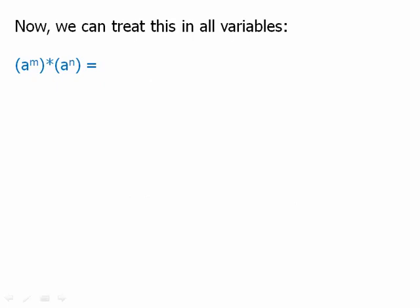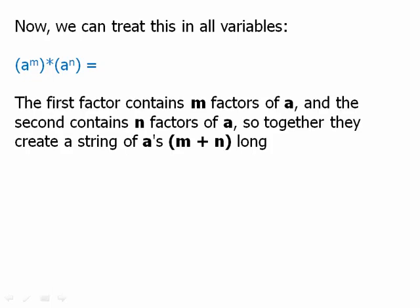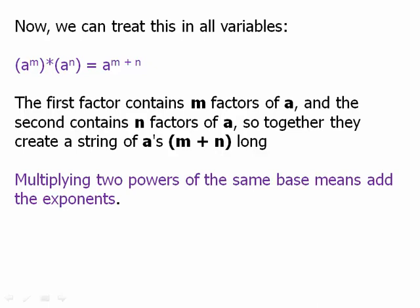Now we can treat this entirely in variables. If I have a to the m times a to the n, the first contains m factors of a — a times a times a, m times — and the second contains n factors of a. Multiply them all together and I'm going to get a long string of factors of a, and the number of factors of a in that string will be m plus n. So we can just add those two numbers — that's the new exponent for a. That is one of our laws of exponents: multiplying two powers of the same base means that we add the exponents.